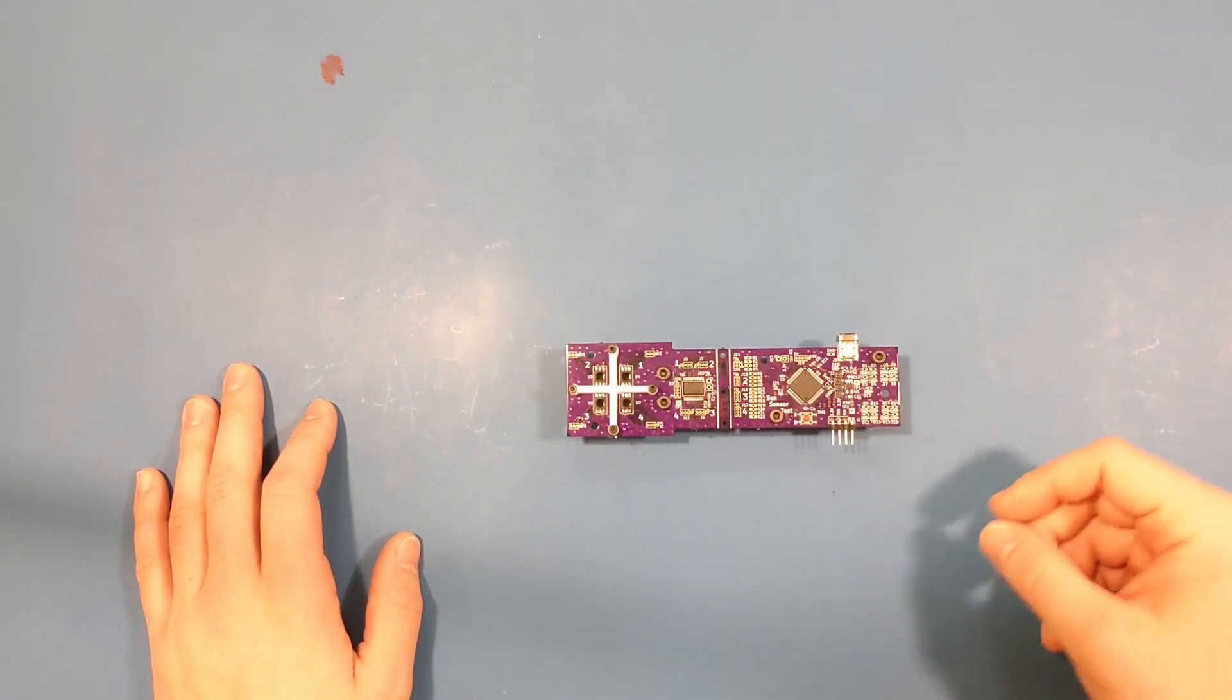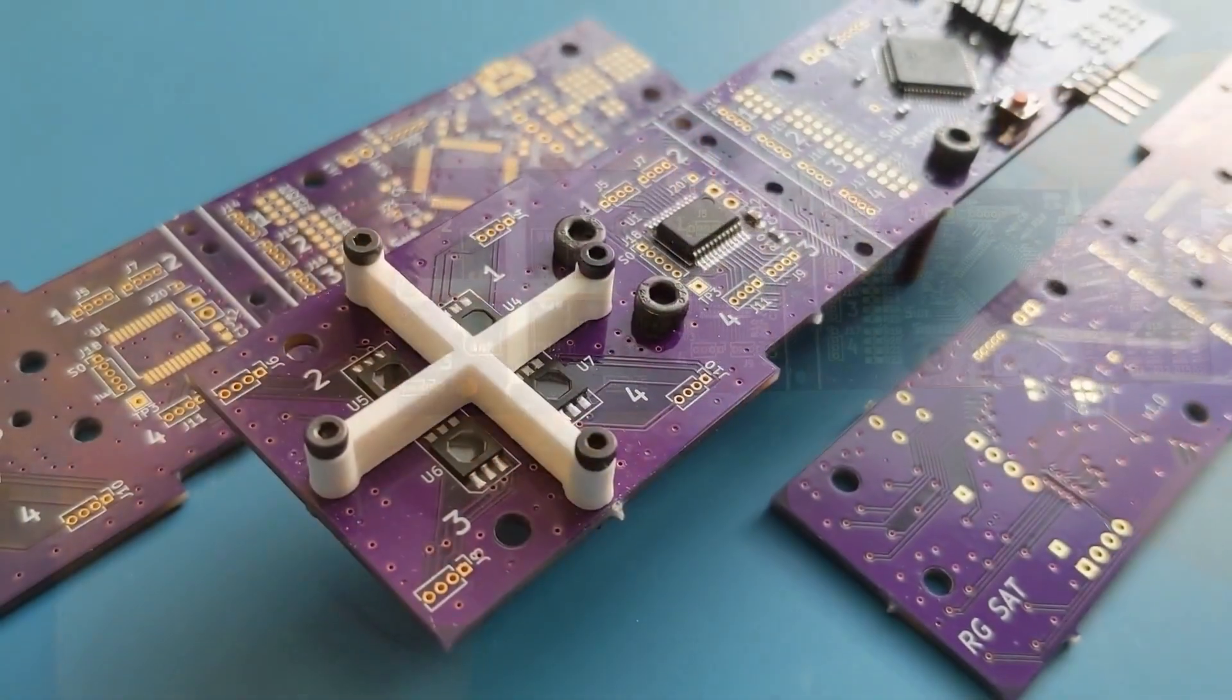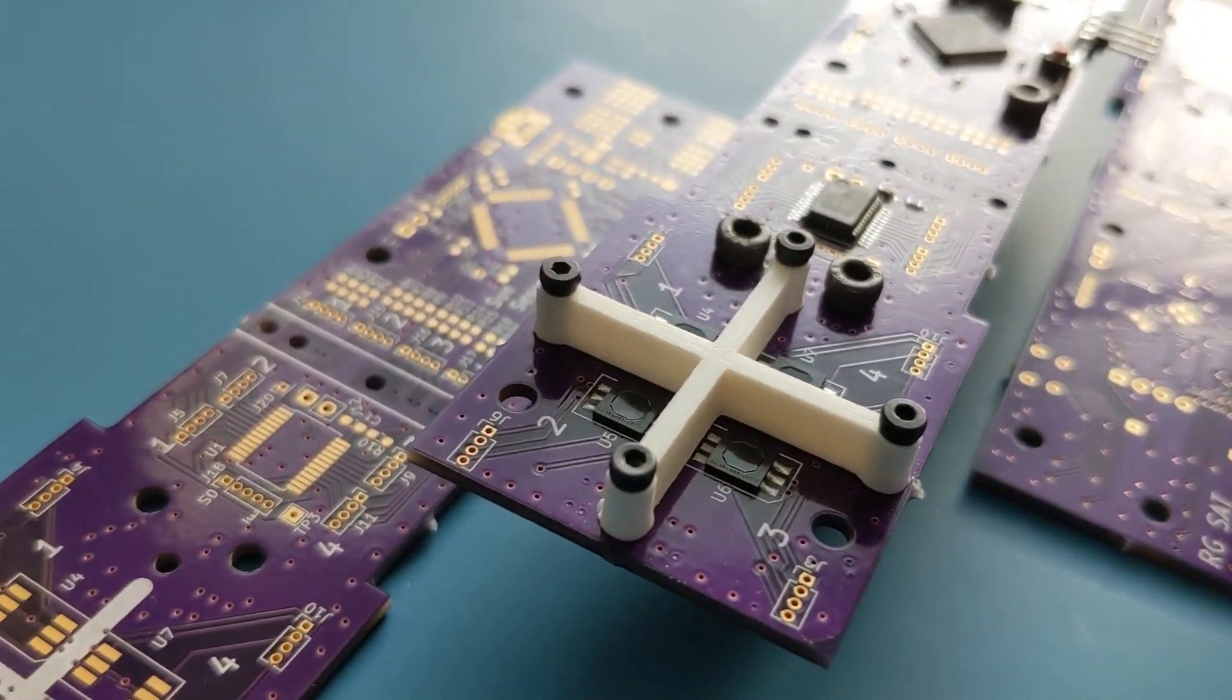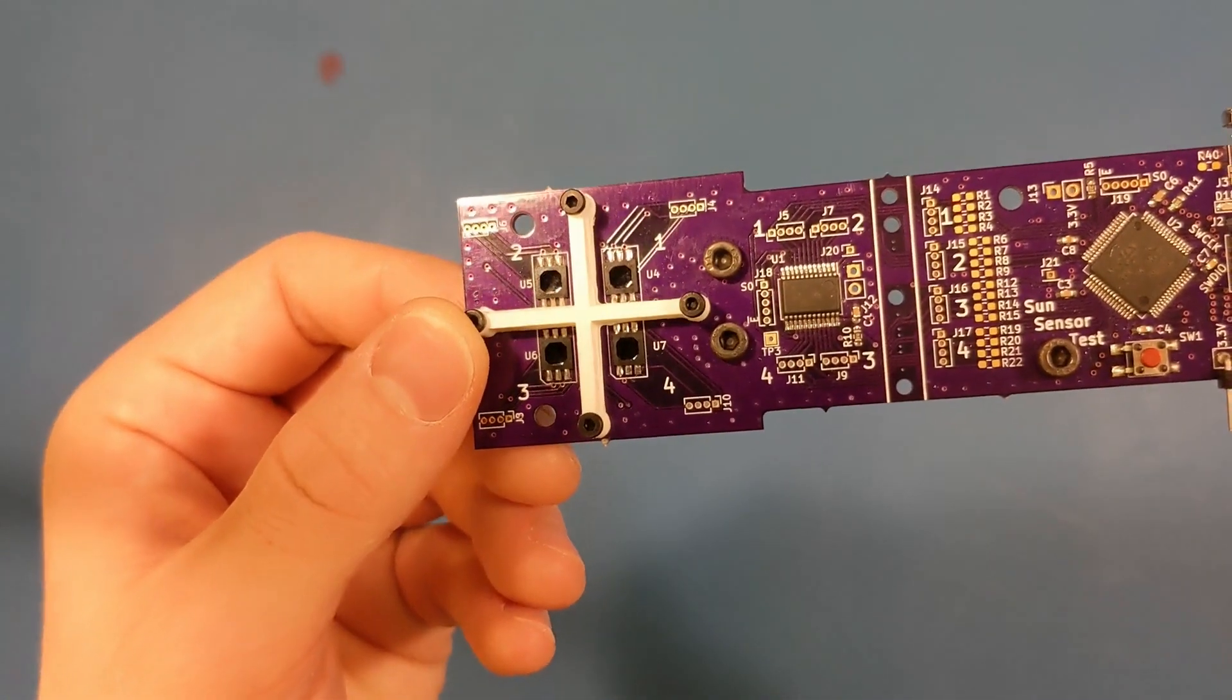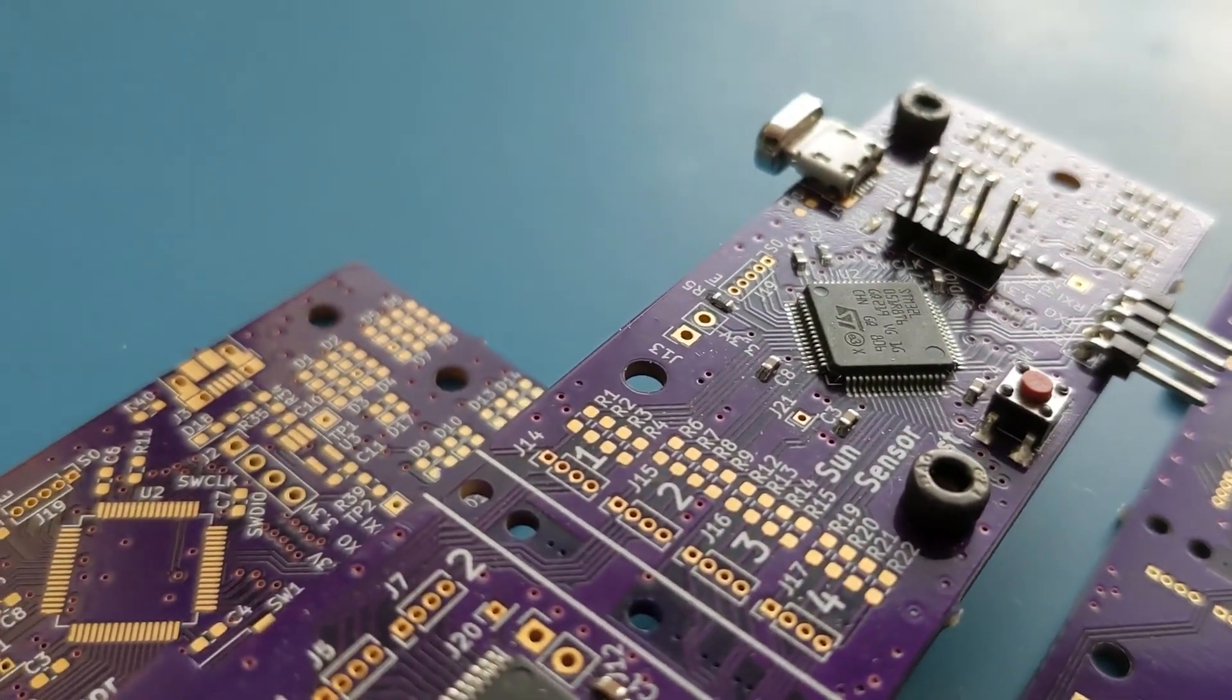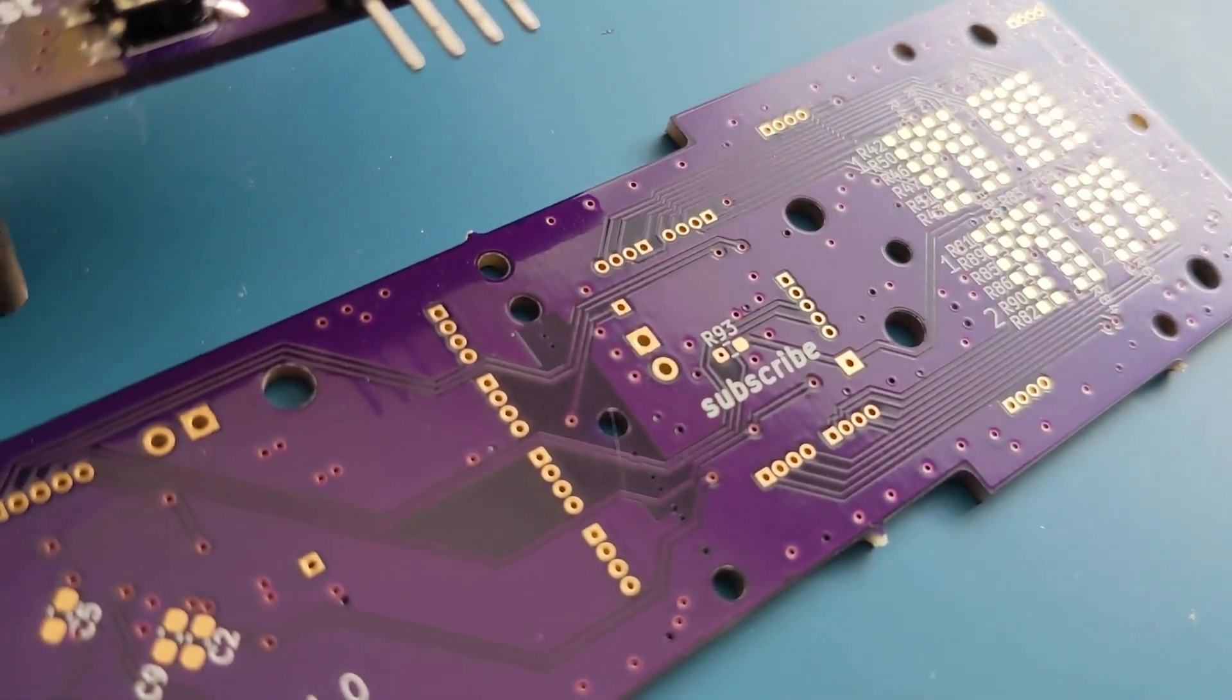This is a sun sensor I'm prototyping for my $1,000 cubesat. It has four four-quadrant photodiodes and this 3D printed X that sits in the middle of them. The rest of the circuitry on this board is just to support reading data off of these photodiodes.